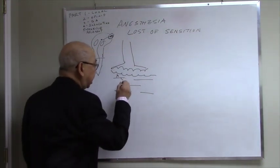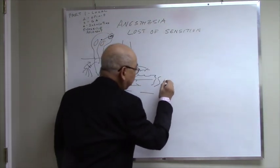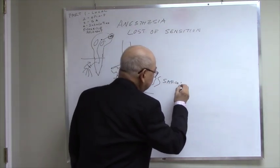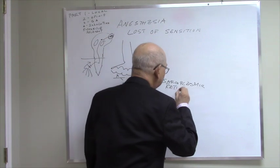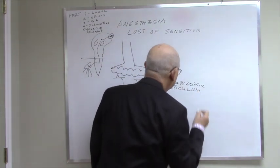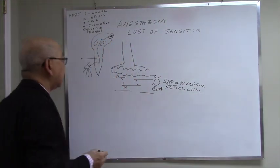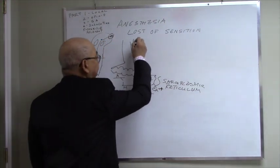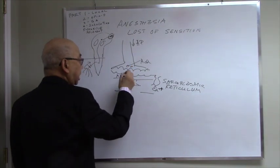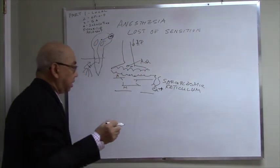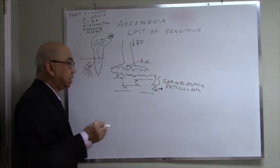And there is also troponin and tropomyosin. And in here, you have the sarcoplasmic reticulum. What the sarcoplasmic reticulum does: you have calcium molecules here. This is the motor nerve. An action potential comes along, acetylcholine is released, and the acetylcholine activates this part here. The sarcoplasmic reticulum releases calcium. The calcium activates the troponin and tropomyosin, and the muscle contracts.